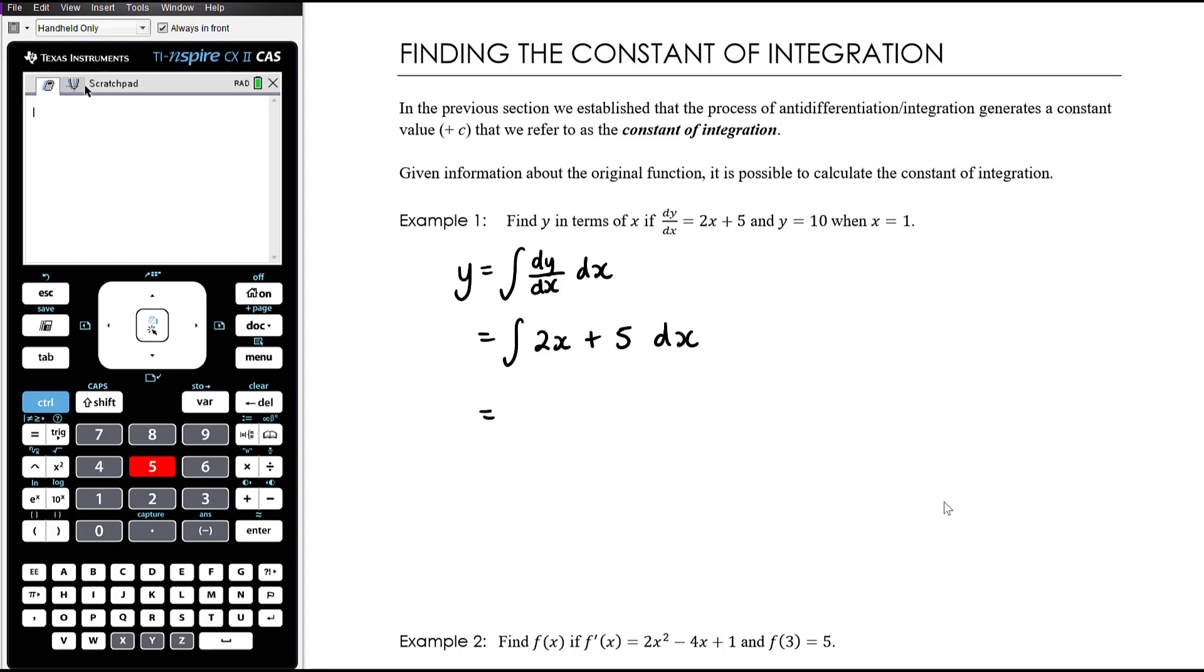So let's anti-differentiate then. That's 2x to the 1, so it becomes 2x squared, add 1 to your power and divide by the new power, which is 2. And then remember we can think about this as 5x to the 0, so it becomes 5x to the power of 1, add 1 to the power and divide by that new power, or just generally when we anti-differentiate a constant we just get x times that constant, and then plus c.